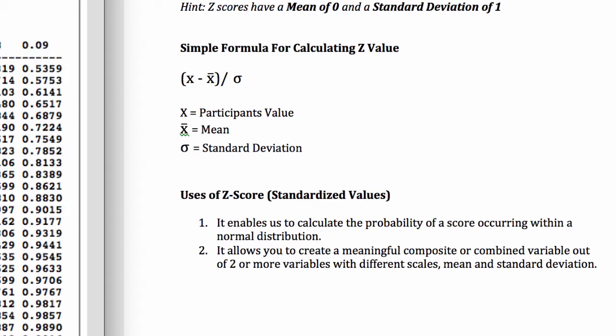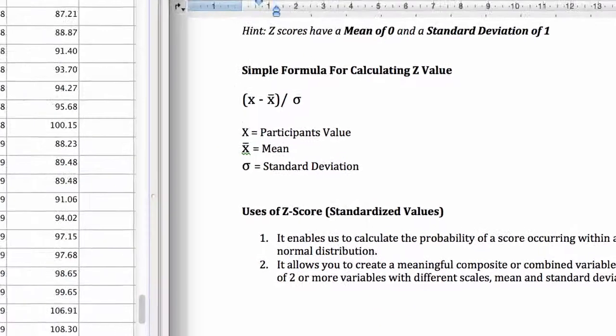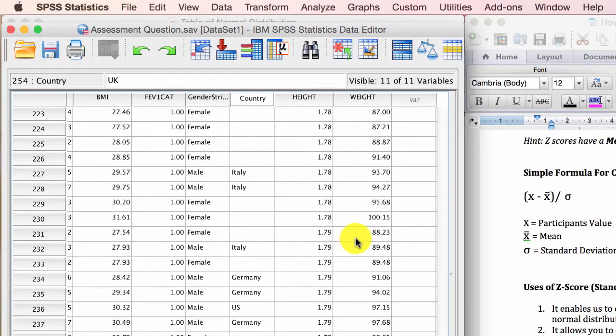These two sets have different scales, will have different means and definitely different standard deviations. In order to create an overall composite score for job satisfaction, we need to calculate Z scores for all these 10 scales and then add them up. But in this example, we're going to look at creating a composite for height and weight.